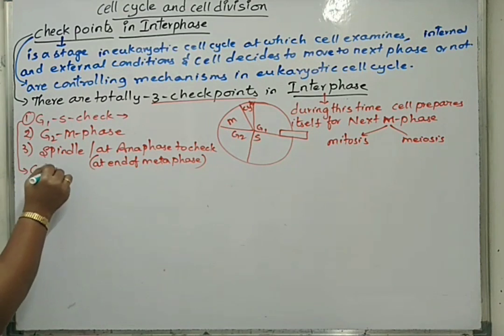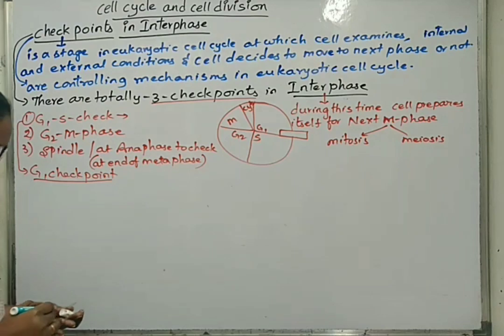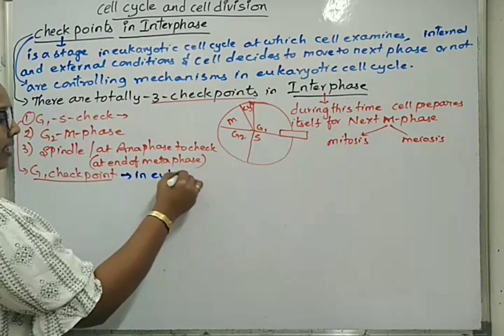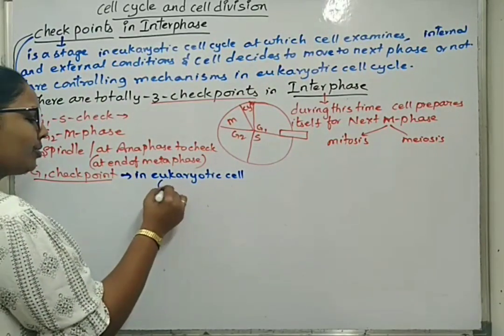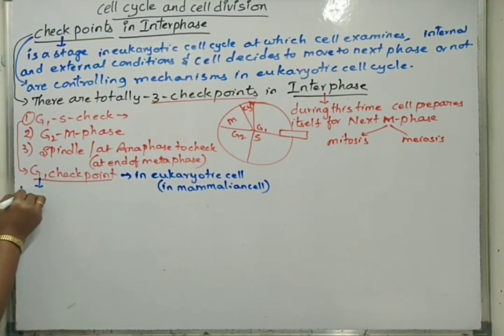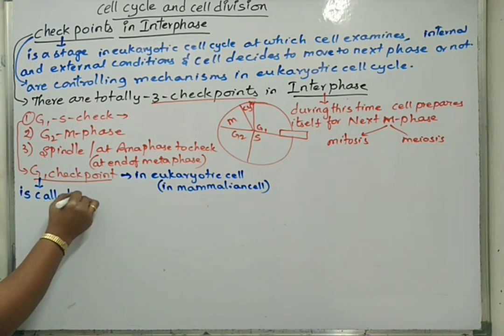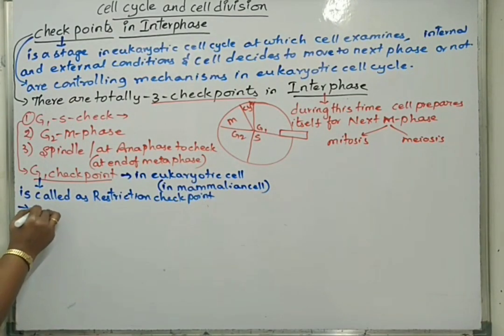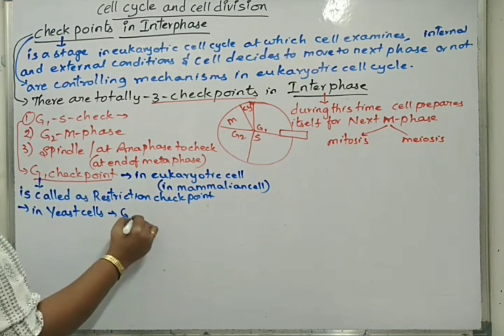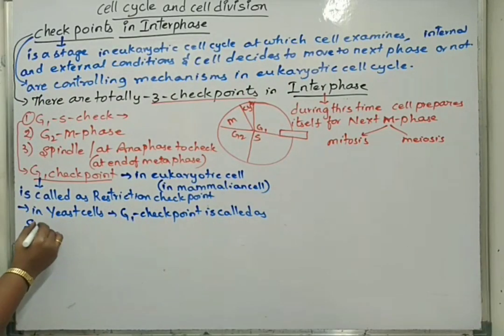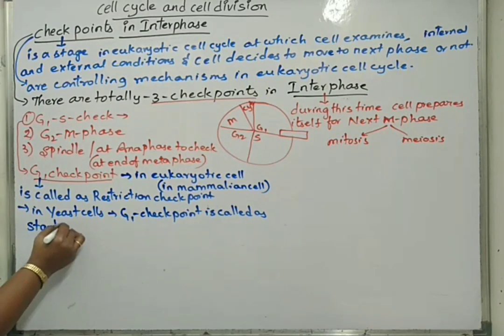First one, G1 checkpoint. At G1 checkpoint, there are some other terms. In eukaryotic cell, under eukaryotes also in mammalian cells, this G1 checkpoint is called as restriction checkpoint. In yeast cells, this G1 checkpoint is called as start checkpoint or start point.